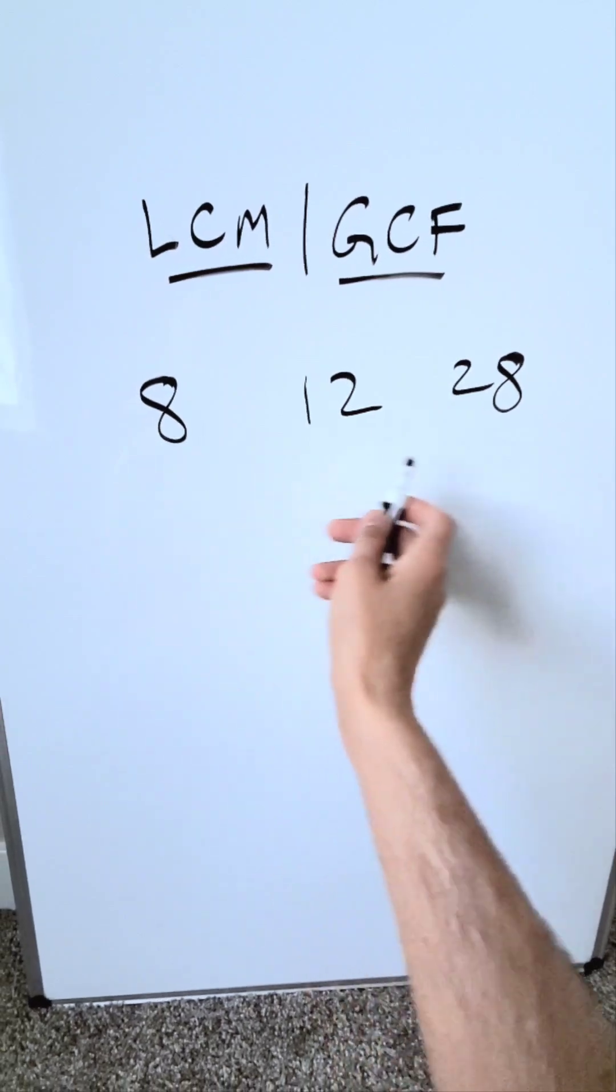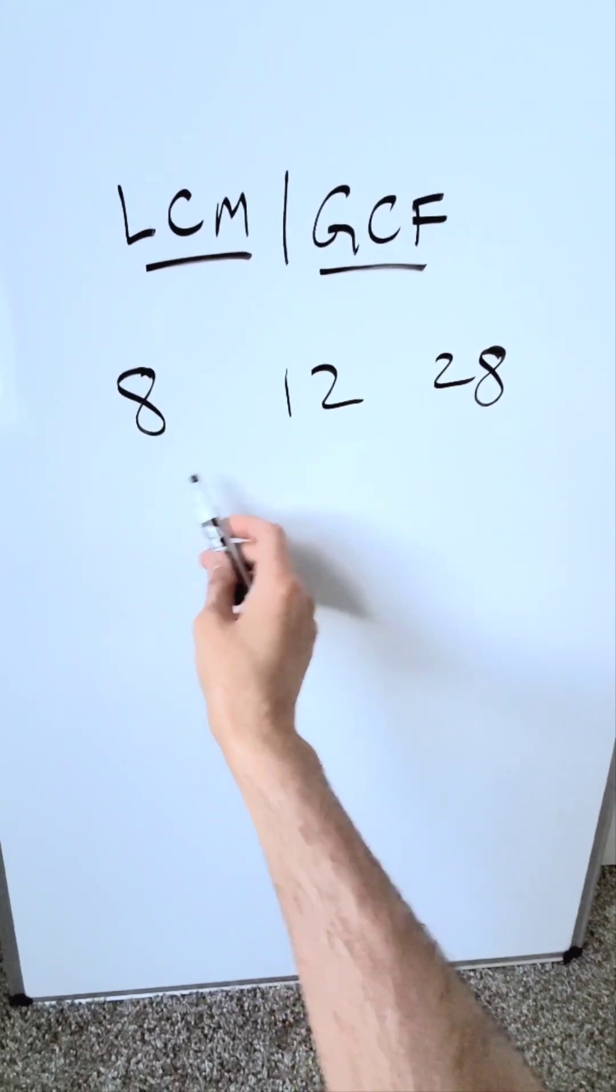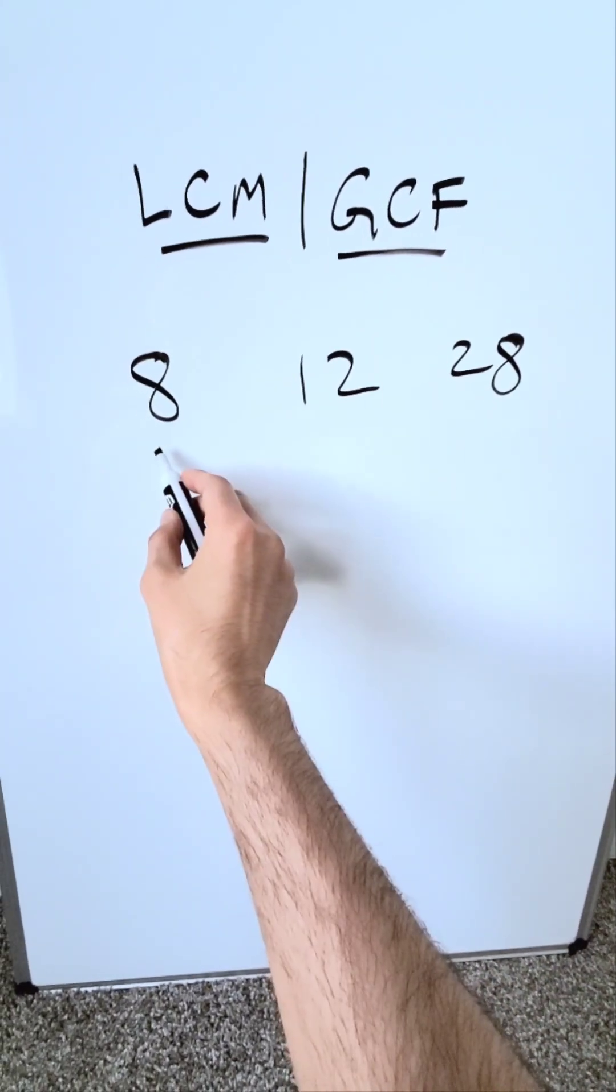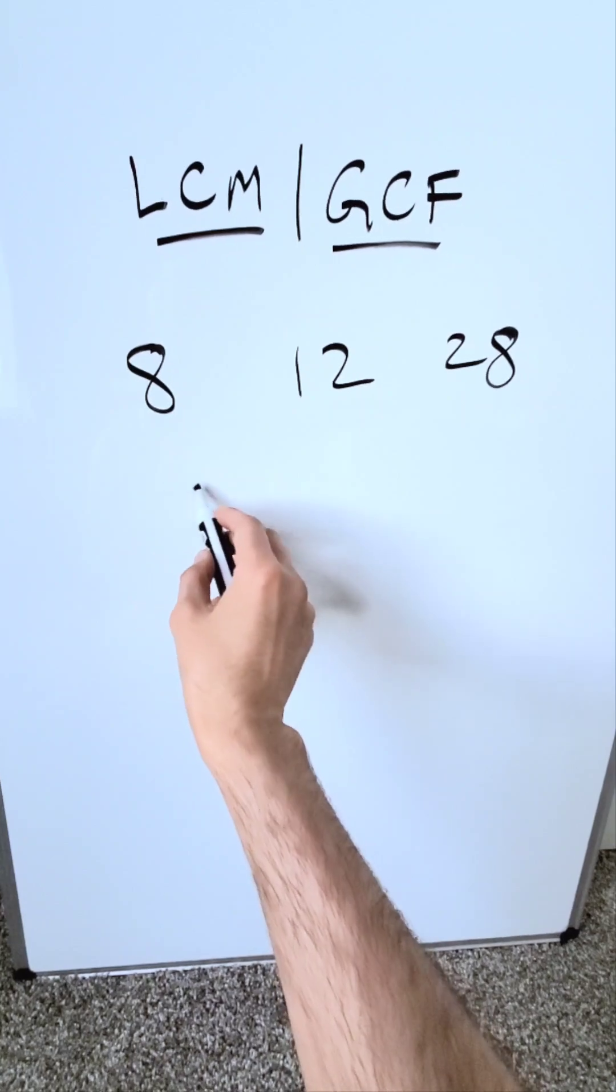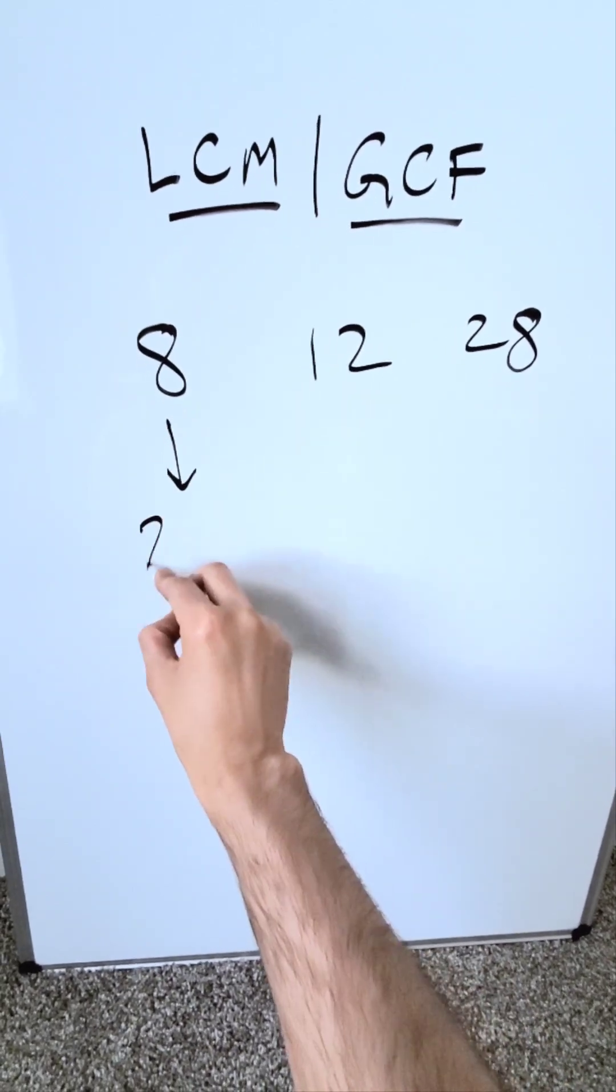And what are these items over here? 8, 12, and 28. Think of this as 4 times 2, which is 2 times 2 times 2. We know this to be 2 cubed.